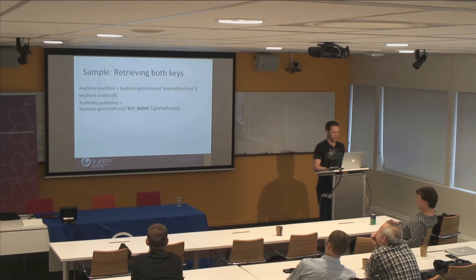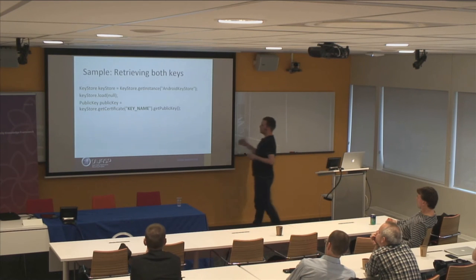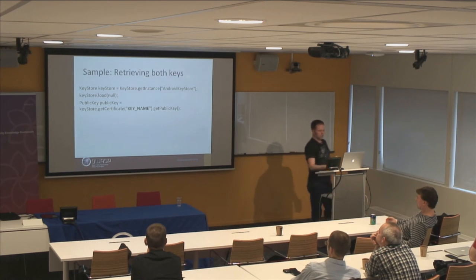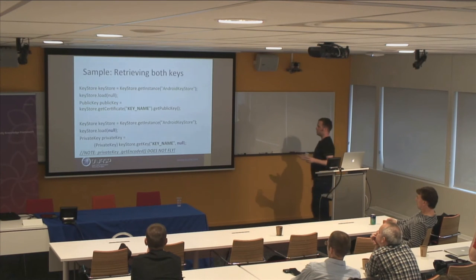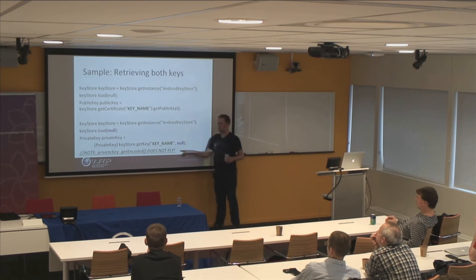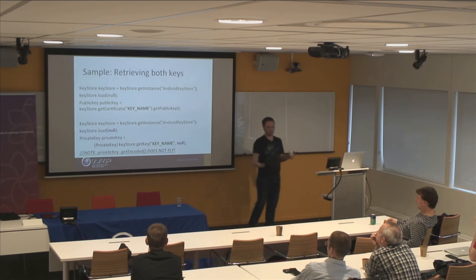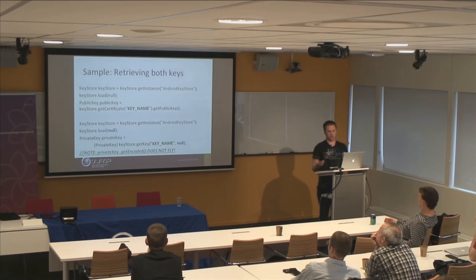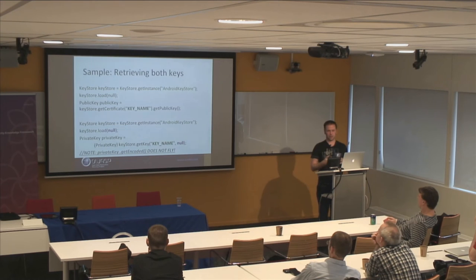We want users to authenticate, and we could set a temporal validity. Then we start generating and get ourselves a key pair. Now how do you retrieve that? The public key is quite easy — you load the Keystore and ask for the certificate under the key name (the alias), and then you get the public key. We can do something similar for the private key — you can just ask again and load it. The cool thing is, you can't do getEncoded — you'll get an exception or null, depending on the implementation. Because it's stored in the Keystore, you can't get it out. So that's a good thing.